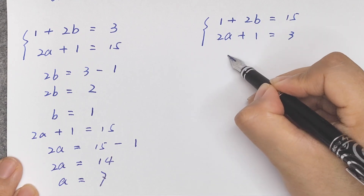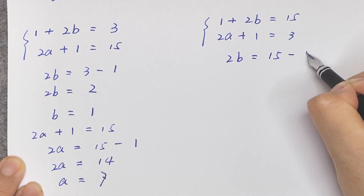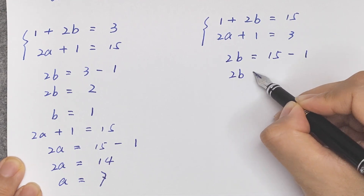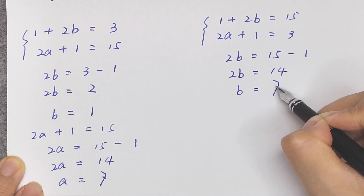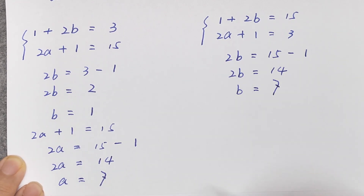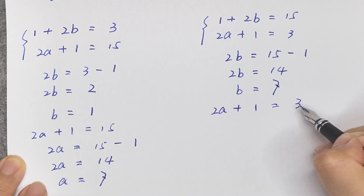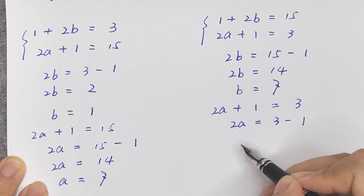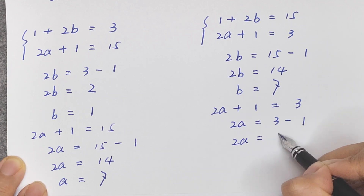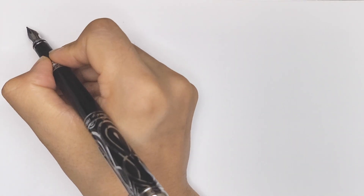For the case (1 + 2b) = 15 and (2a + 1) = 3: 2b = 15 − 1 = 14, so b = 7. Then 2a + 1 = 3, so 2a = 2, giving a = 1.